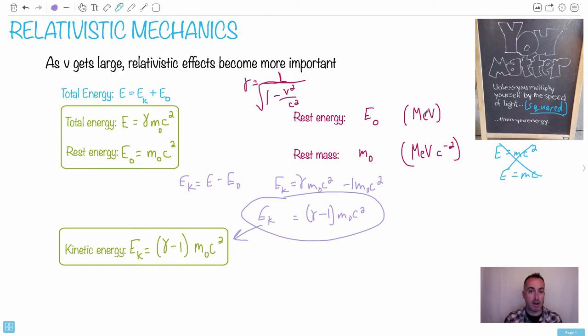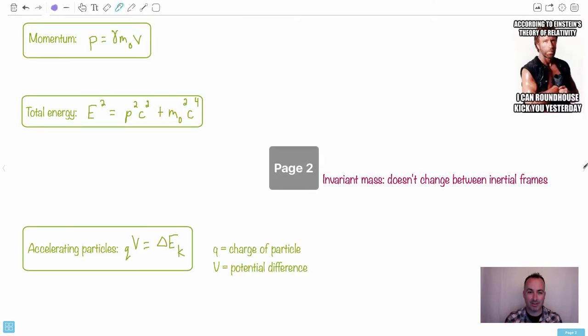Kinetic energy, again, could be measured in mega electron volts. So we can deal with mechanics. It's actually not so hard. You just got to factor in a few things. I like this Chuck Norris one. According to Einstein's theory of relativity, I can roundhouse kick you yesterday. No, you can't go back in time. Sorry.